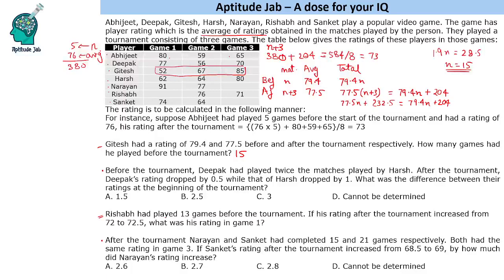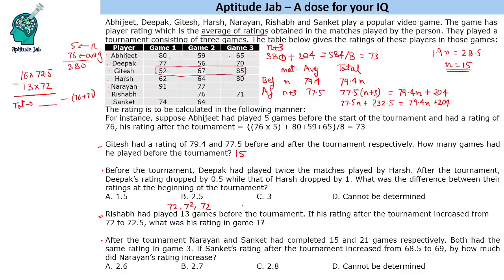Rishabh had played 13 games before the tournament. His rating after the tournament increased from 72 to 72.5. What was his rating in game 1? This is purely based on the concept of averages. One way is to calculate 16 into 72.5 minus 13 into 72 to get the total in the three games, then subtract the known scores of 76 and 71. Suppose in the 13 games he had an average of 72, and suppose he scored 72 in all three matches — his average would remain 72.